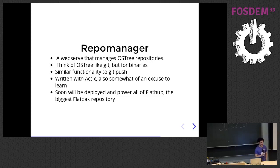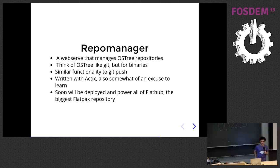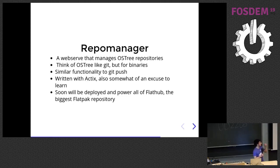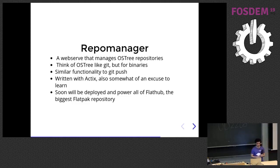Flatpak is a packaging system for sandboxed applications that are independent of the host and can run across any distribution and any desktop environment. It uses OSTree underneath — OSTree is like git for binaries, with deduplication and the ability to make diffs out of binaries. RepoManager is the tool used for FlatHub, which is the largest Flatpak repository. It's written in Rust — a web server written in Rust that provides functionality similar to git push. It will soon be deployed and power all of the FlatHub infrastructure, which serves many millions of users.